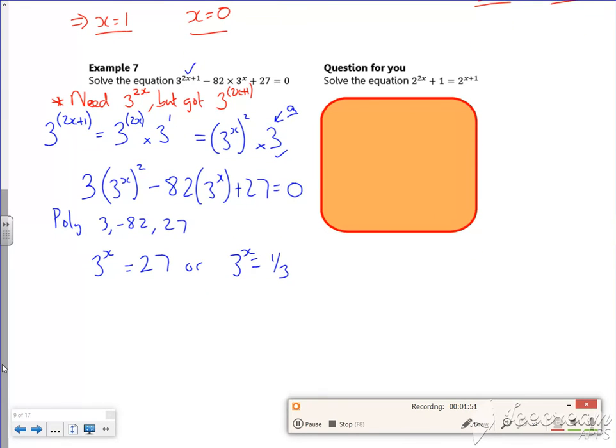So let's put these in index notation. 27 is 3^3, so x must be 3. 3^x is 3^(-1), so x must be -1. There we go.